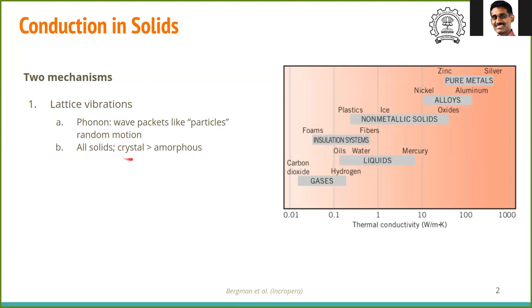Crystalline solids, which are regularly organized, have a higher thermal conductivity because the transmission of these waves is more regular and not disordered. Once you go into amorphous or non-metallic insulation systems, the thermal conductivity reduces because the phonon motion is not as regular as it is in a crystal. The second mechanism comes from electron transport.